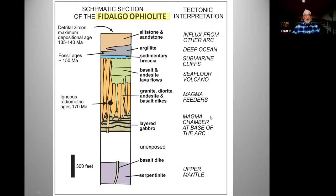Above all these volcanic rocks is a package of sedimentary rocks. That means volcanism ceased at some point. Since this is in the deep ocean, deposition was very slow because there aren't sediments coming off the continents — all the sediments are clay-sized particles or marine organisms. Basically you get clay, and as you get closer to a continent or another volcanic arc you start getting siltstone and sandstone.